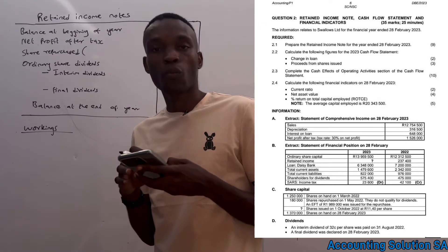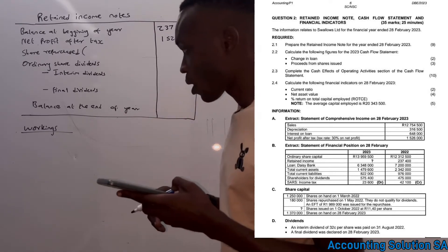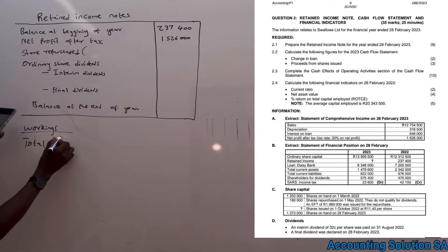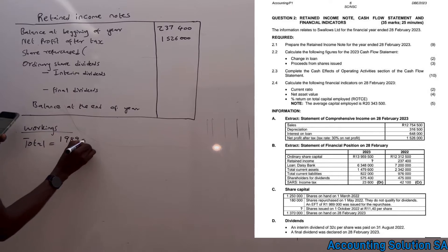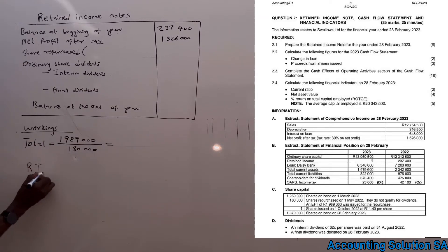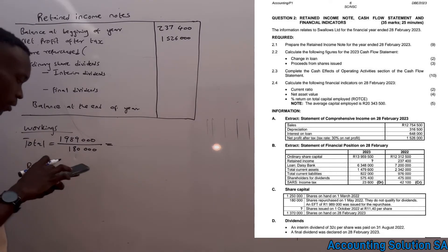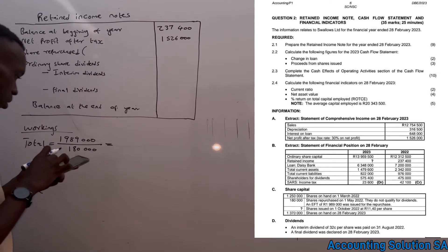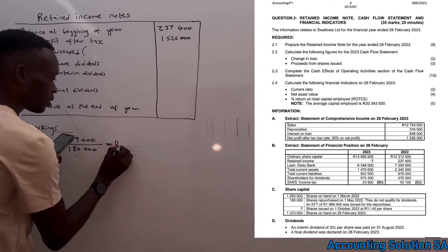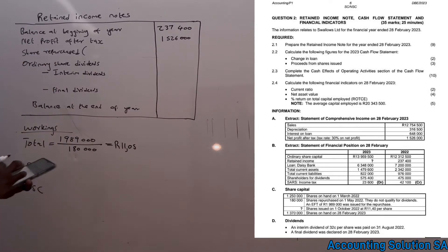The first step is to calculate the total amount per share. They paid a total of R1,989,000 and we divide it by 180,000 shares. Let me calculate: R1,989,000 divided by 180,000 gives us R11.05. That is the price used to repurchase the shares.